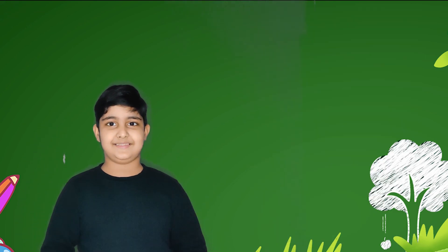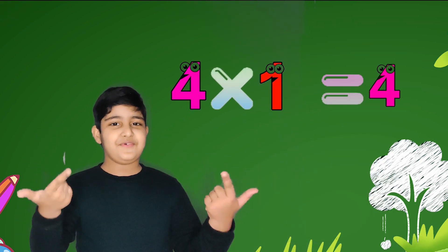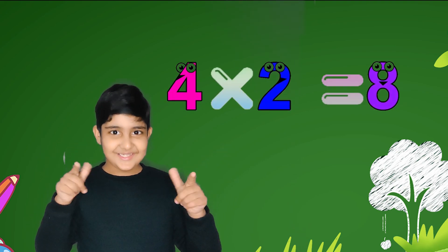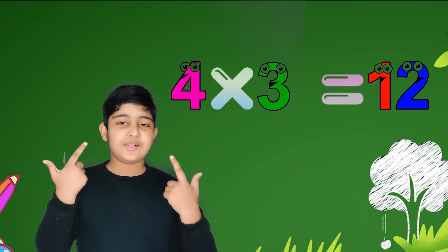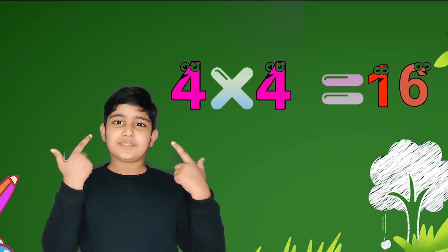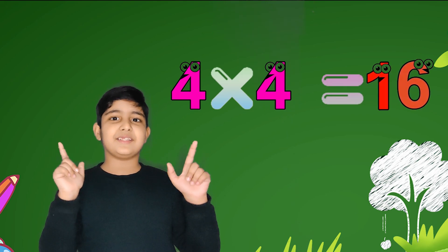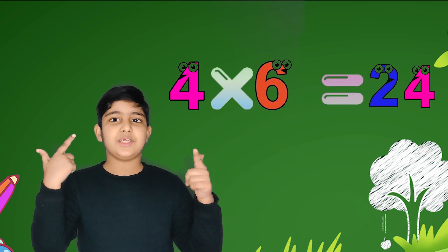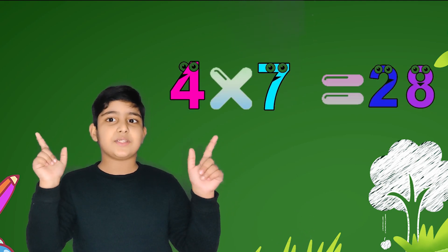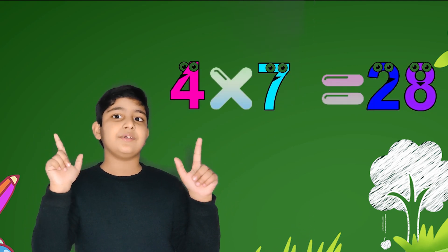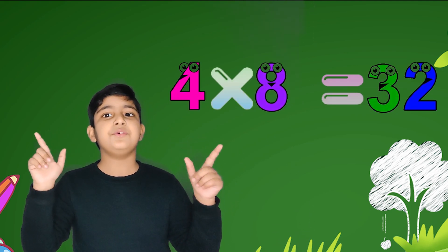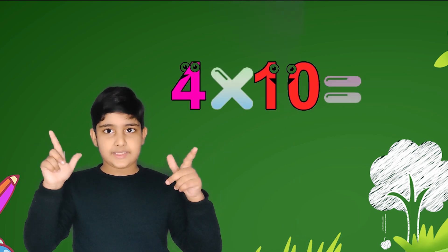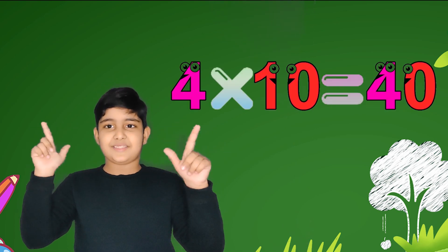Let's sing again. 4 ones are 4, 4 twos are 8, 4 threes are 12, 4 fours are 16, 4 fives are 20, 4 sixes are 24, 4 sevens are 28, 4 eights are 32, 4 nines are 36, 4 tens are 40.